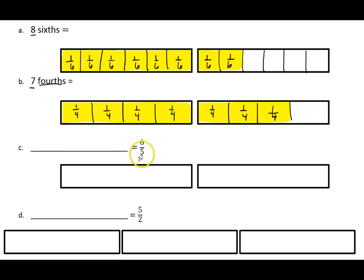In the next problem, I'm given the fraction, and I need to write the unit form. The numerator tells me that I have six pieces. The denominator tells me that each piece is a fifth. So I need to show six fifths on my tapes. I'm going to start by dividing them into five equal pieces.